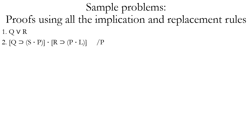Here's a proof that allows us to take any number of steps using all implication and replacement rules. We have one premise Q wedge R, and another that's a conjunction of conditionals where Q and R are the antecedents, and we're trying to derive P. We notice the pattern: a disjunction Q wedge R, and a conjunction of conditionals whose antecedents match those two disjuncts. That sets us up for constructive dilemma. This turns lines one and two into a disjunction where the consequents of those two conditionals — S dot P and P dot L — become the disjuncts. We're getting closer to P by itself, but not quite there.